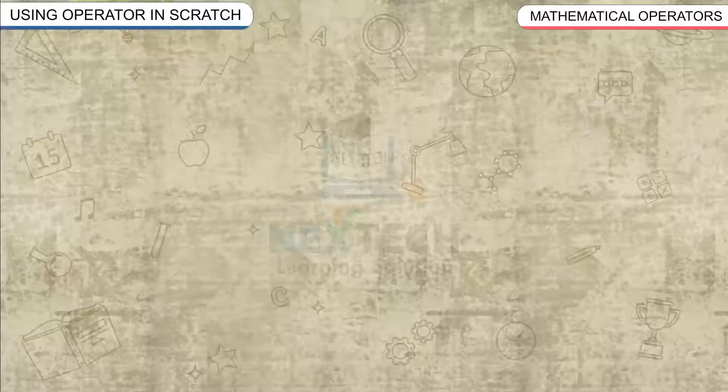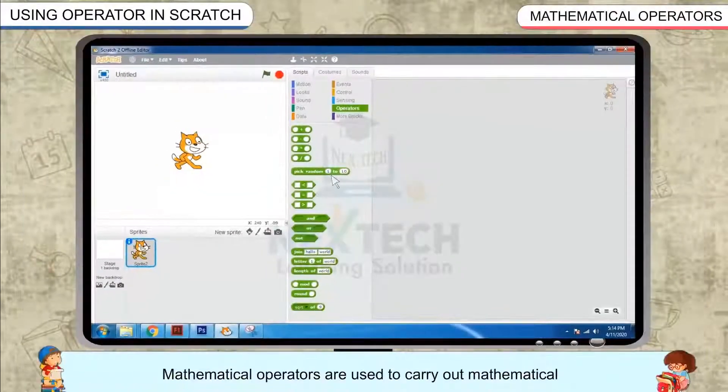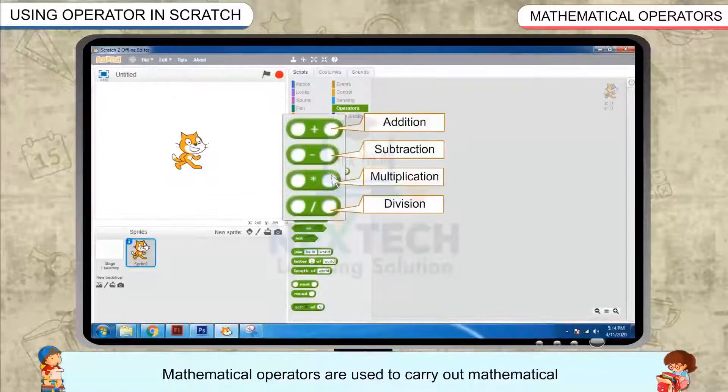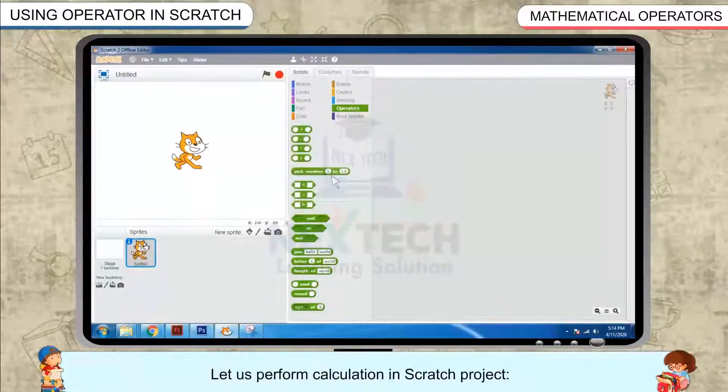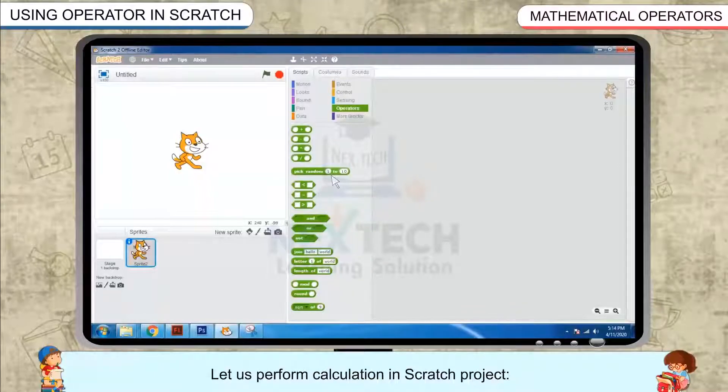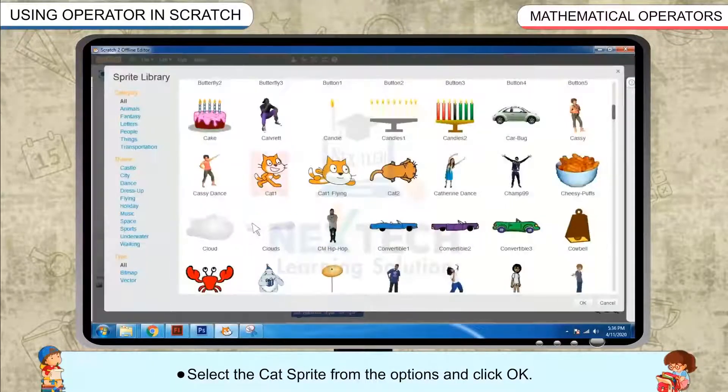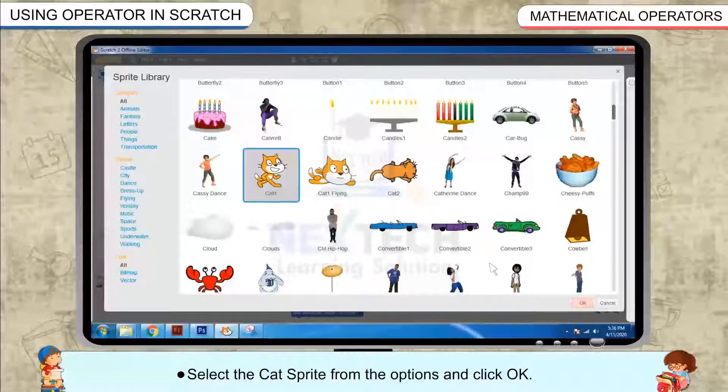Mathematical Operators are used to carry out mathematical operations on the provided numerical values. Let us perform calculation in Scratch Project. Select the cat sprite from the options and click OK.